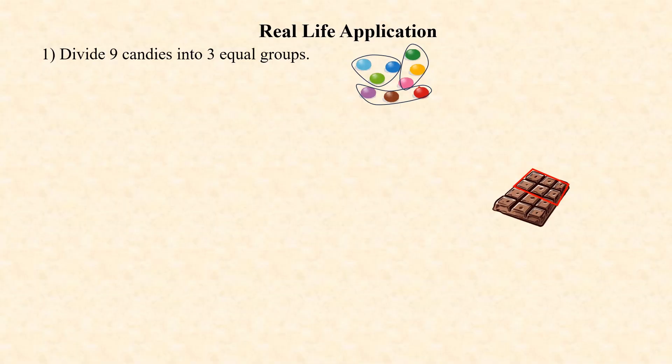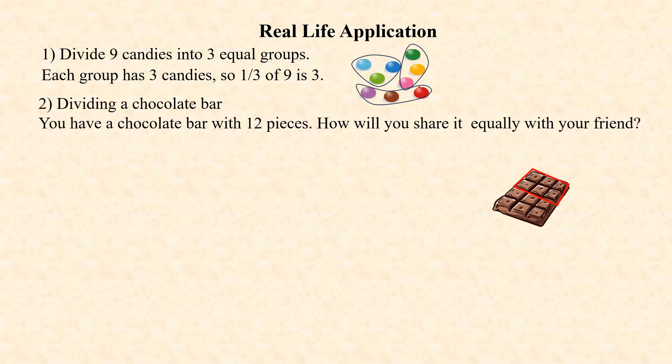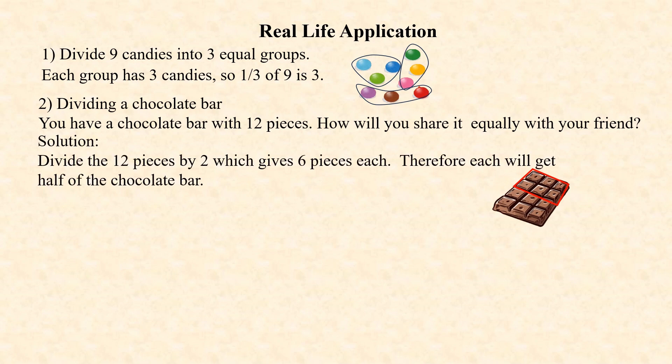Here are some word problems based on unit fraction of a whole number. First question: divide 9 candies into 3 equal groups. Given 9 candies, divide them into 3 equal groups — each group has 3 candies. So 1/3 of 9 is 3. Second question: you have a chocolate bar with 12 pieces. How will you share it equally with your friend? Divide 12 pieces by 2 — each person gets 6 pieces. So half of 12 is 12 ÷ 2 = 6.